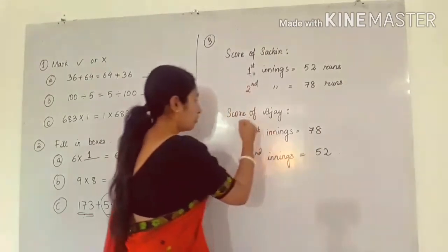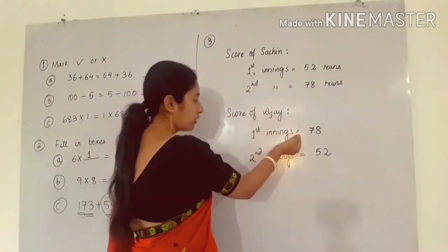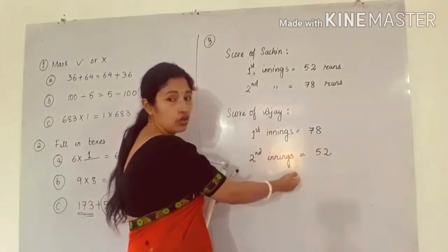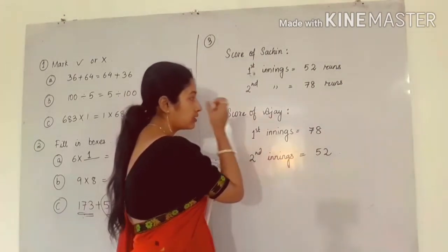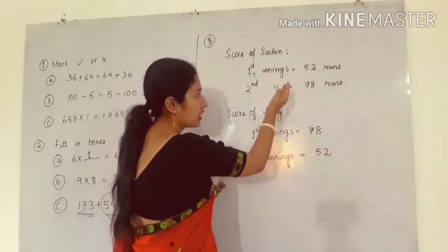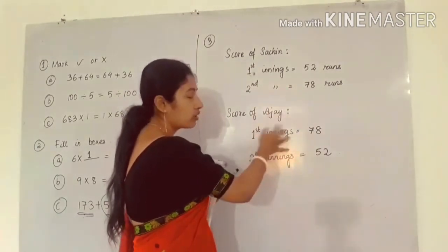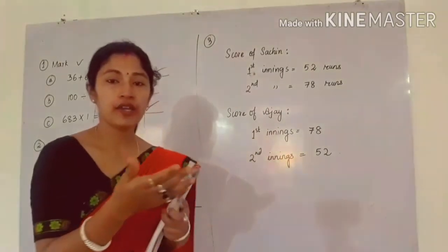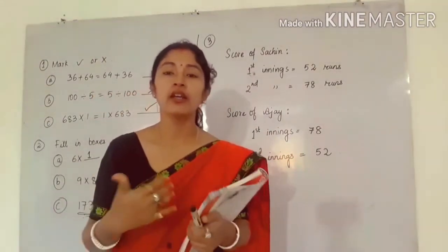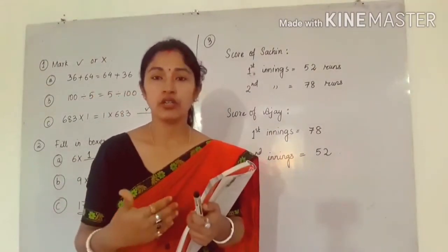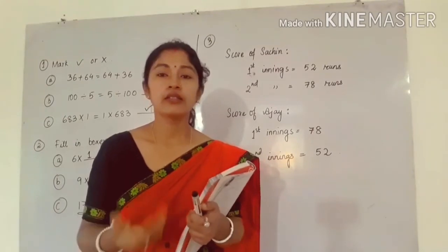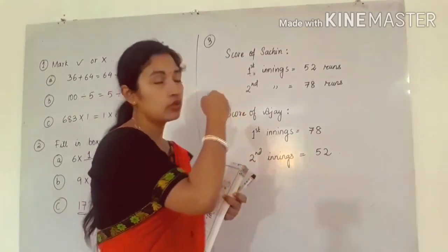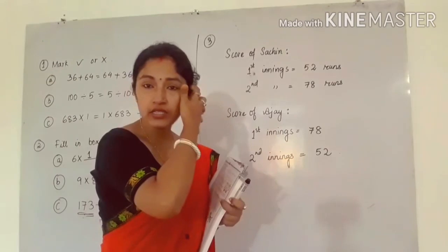You have to get the total score of Sachin by adding 52 and 78. Then you have to get the total score of Ajay by adding these two numbers as well. Both the numbers are the same — just the order is different. If we add two numbers and the order is changed, we will get the same answer again.